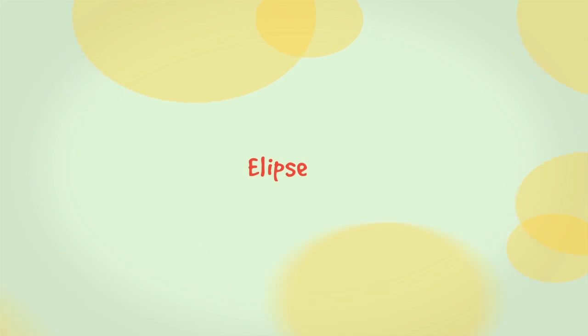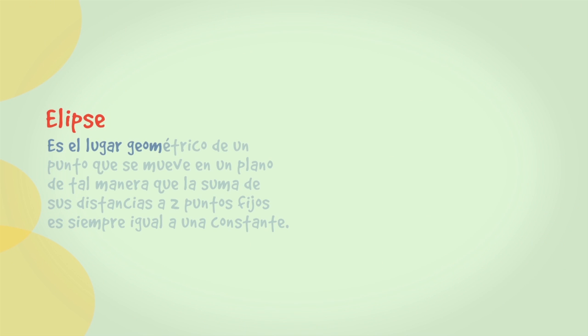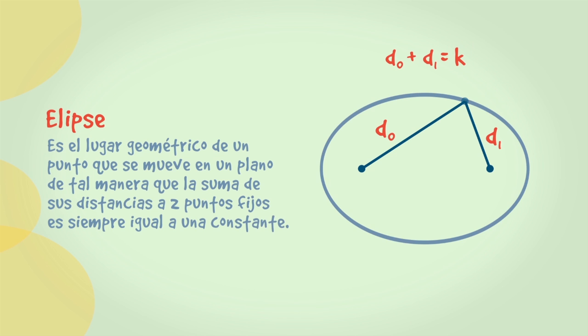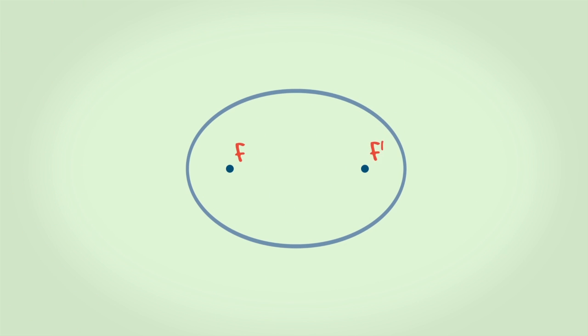La elipse es el lugar geométrico de un punto que se mueve en un plano, de tal manera que la suma de sus distancias a dos puntos fijos es siempre igual a una constante. Los dos puntos fijos se llaman focos.